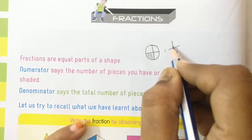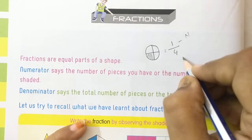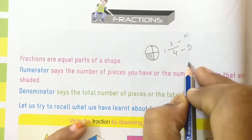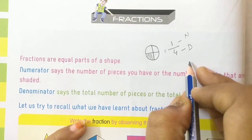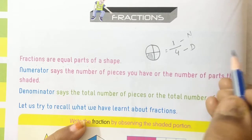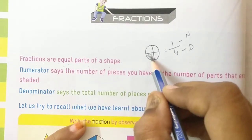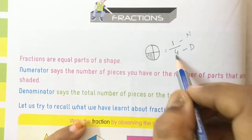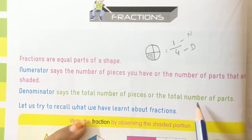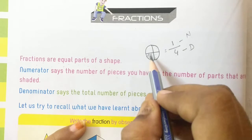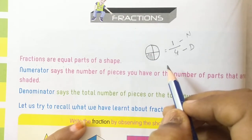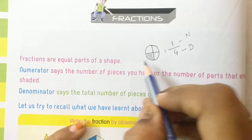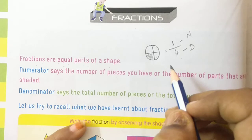Do you understand? The numerator means the upper number — the number of pieces you have or the number of parts that are shaded. I shaded one part, that's why I wrote one in the numerator place. The denominator says the total number of parts — total four parts, so I wrote four in the denominator place. Write four in the denominator place and one in the numerator place.